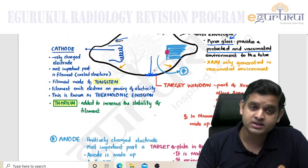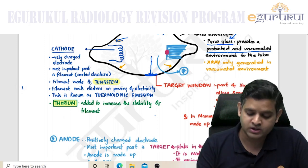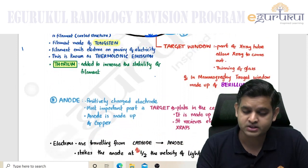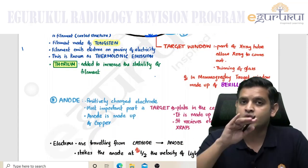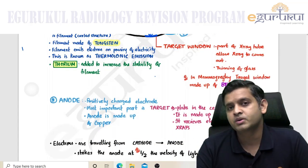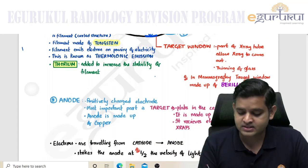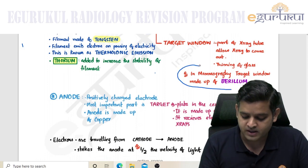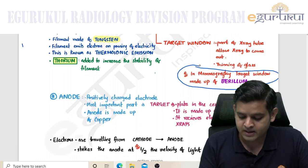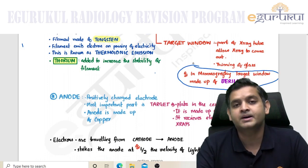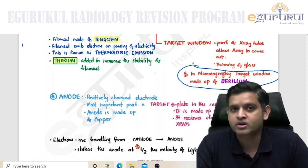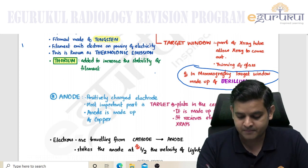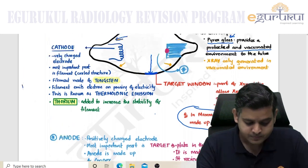An important MCQ to remember is that in the majority of x-ray tubes, the envelope window is a thinning of glass, whereas in mammography, it is made up of beryllium.